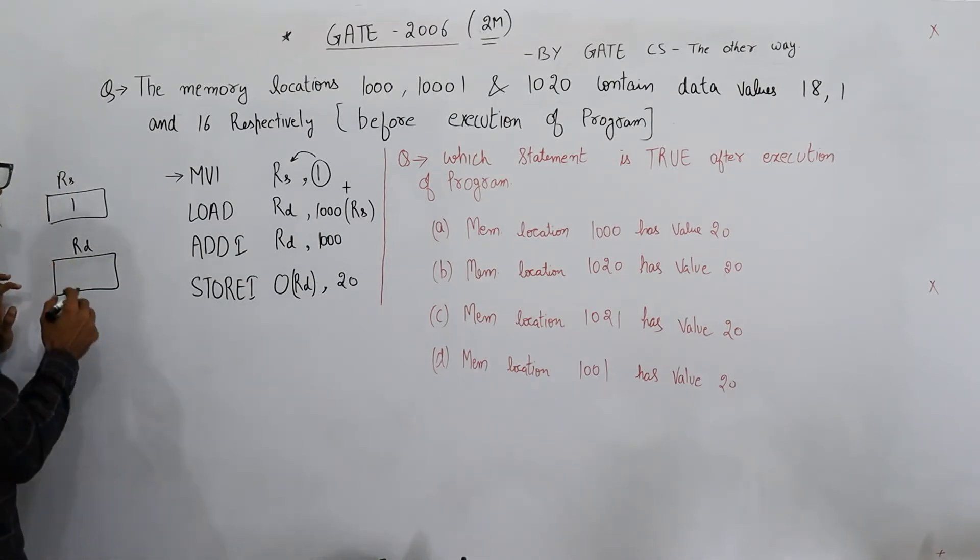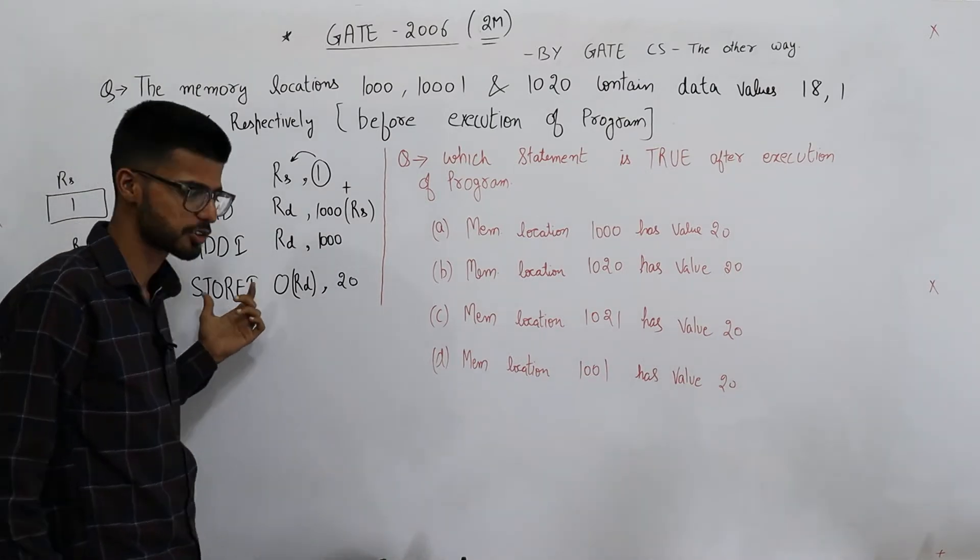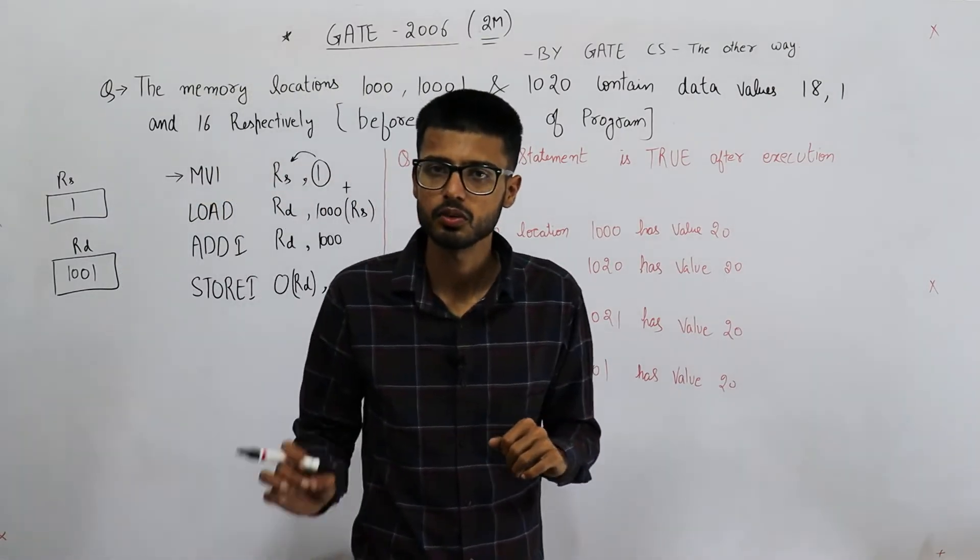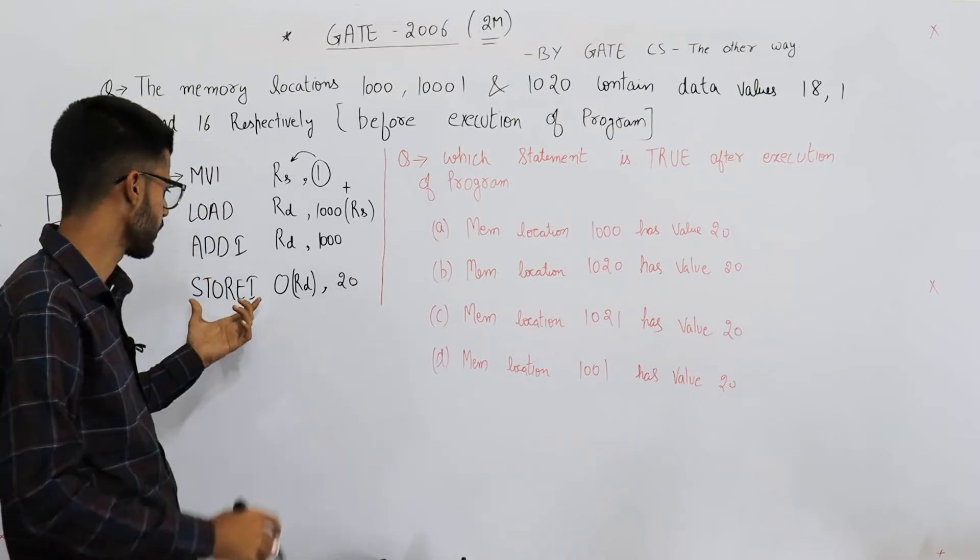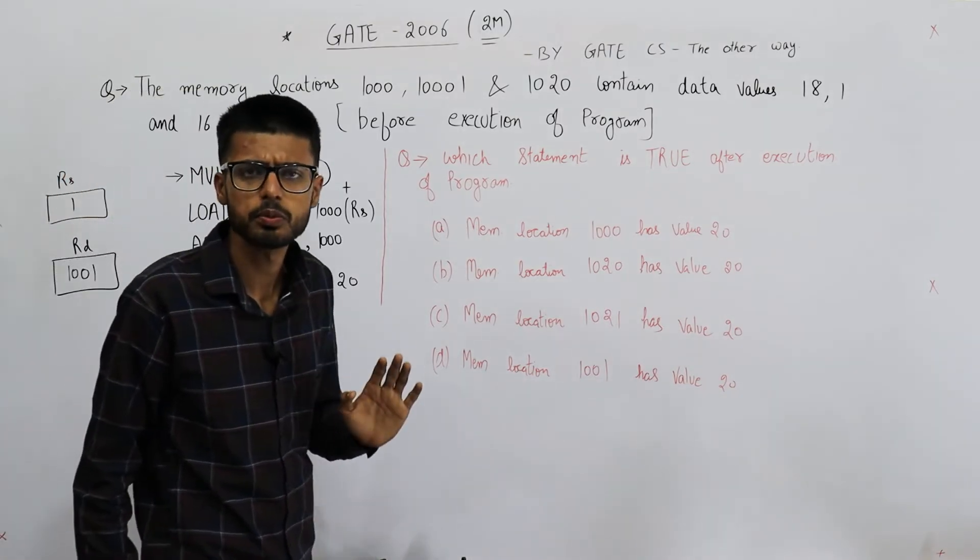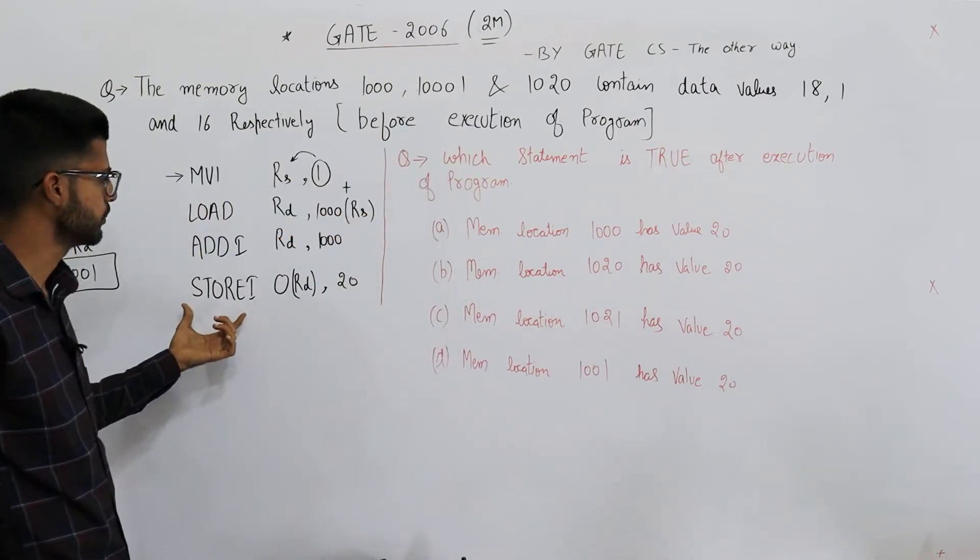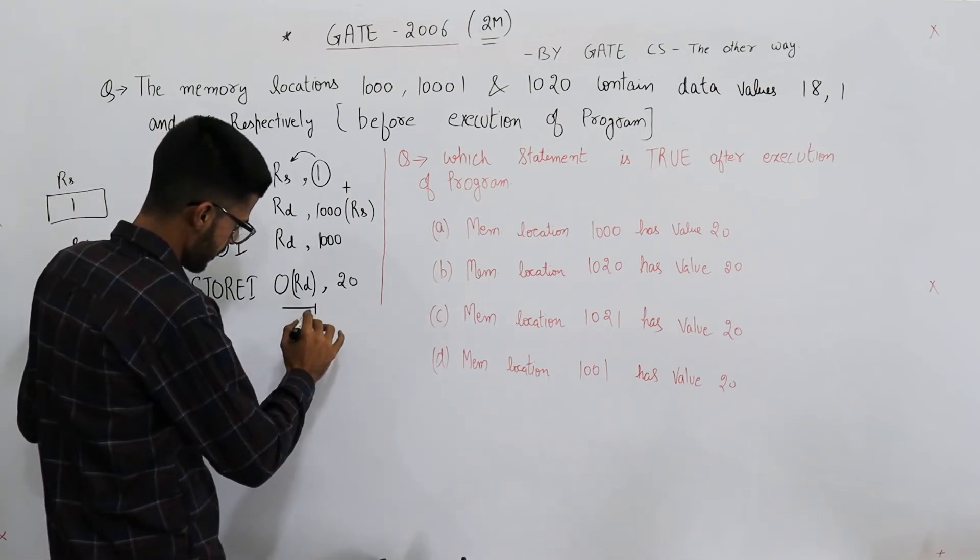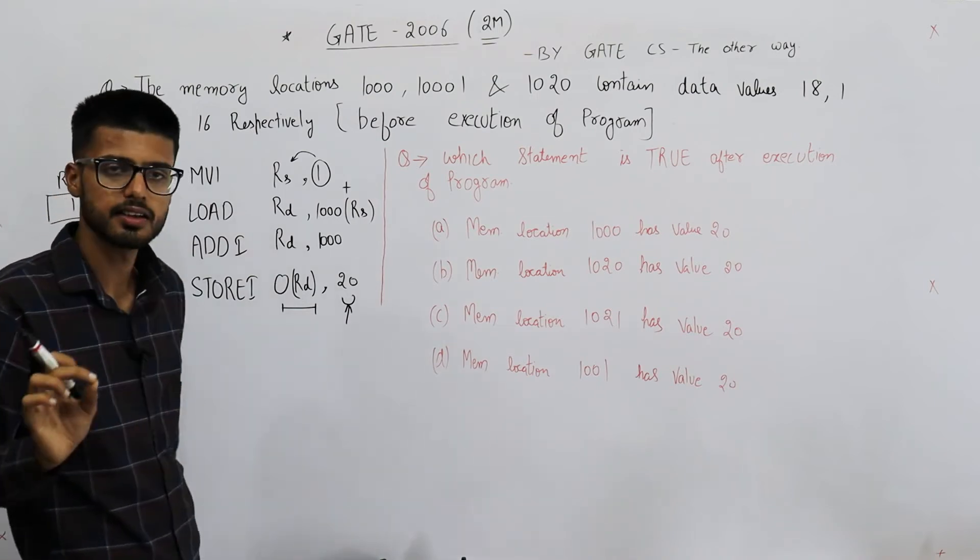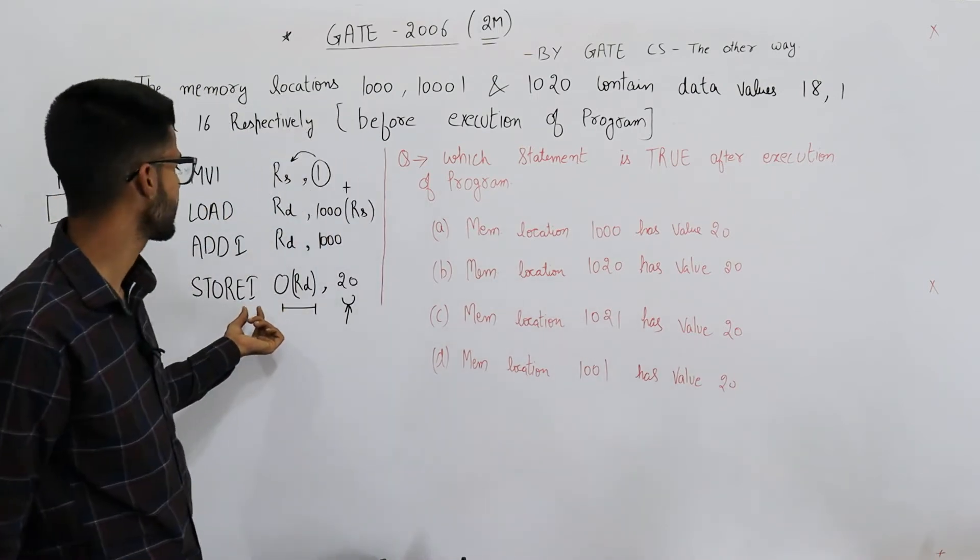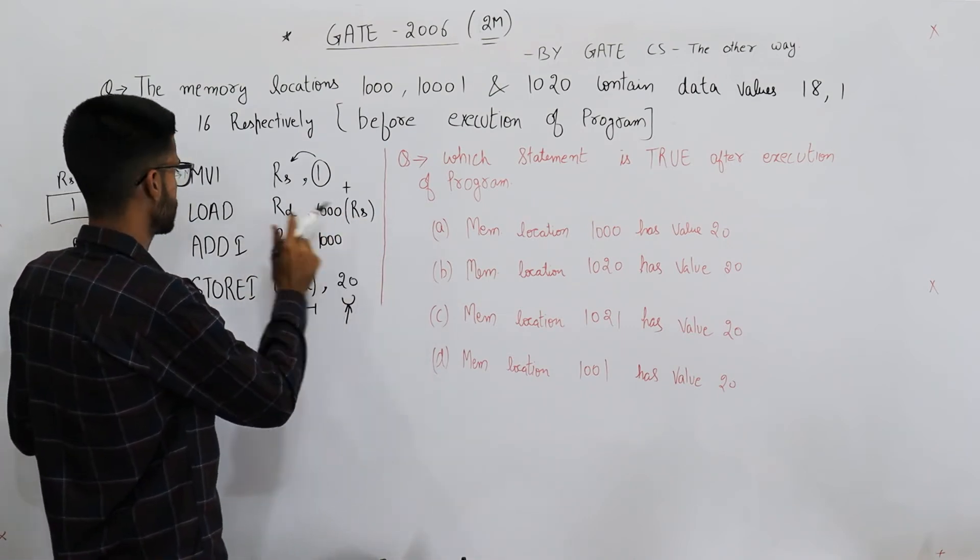Next is STORE I - it's not story, it's store I. Store I means store immediate. Anyways, their meanings are given in the question, but you need to learn them. Whenever an instruction ends with I, most probably I is for immediate - that's the addressing mode, immediate addressing mode. So store I means into this memory location we need to store this data. Whatever is specified in the instruction is the data - it's not any address. That's what immediate addressing mode means. So this is our data; it needs to be stored here.